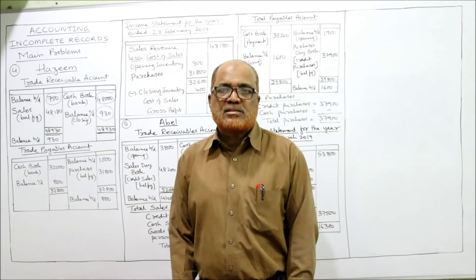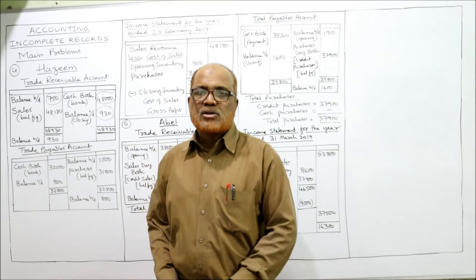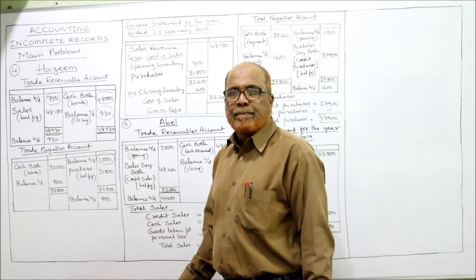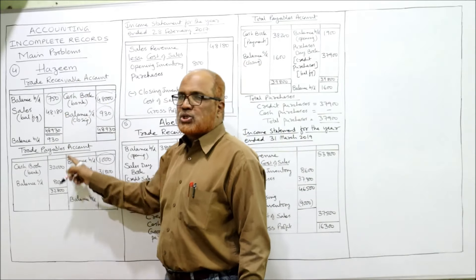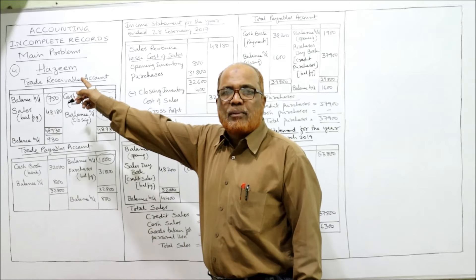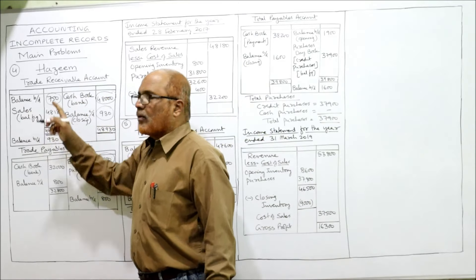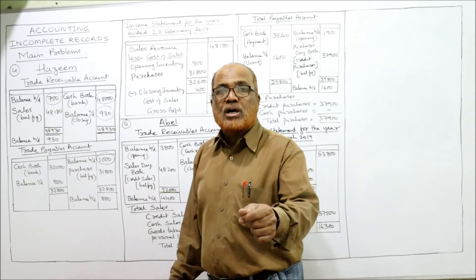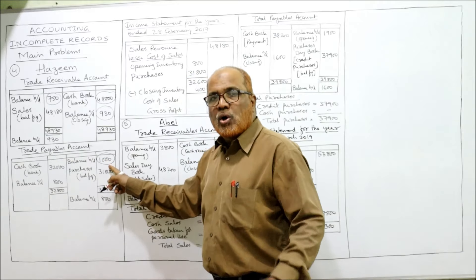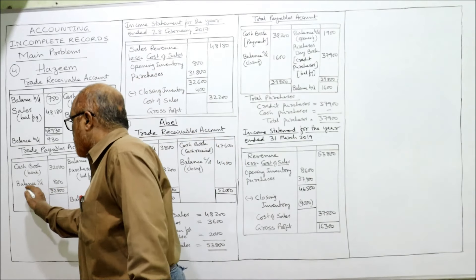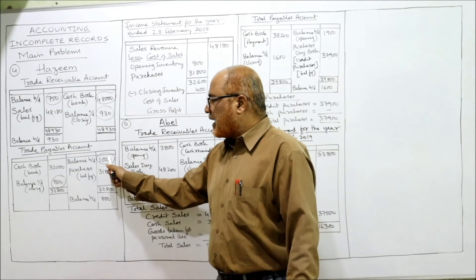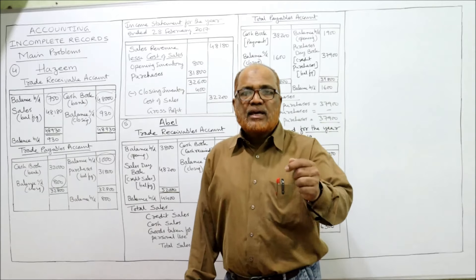Now the trade payables account, prepared to find purchases. Opening balance is on the credit side — balance brought down 1,000 — because payables are a liability and show a credit balance. The closing balance goes on the debit side: 800.